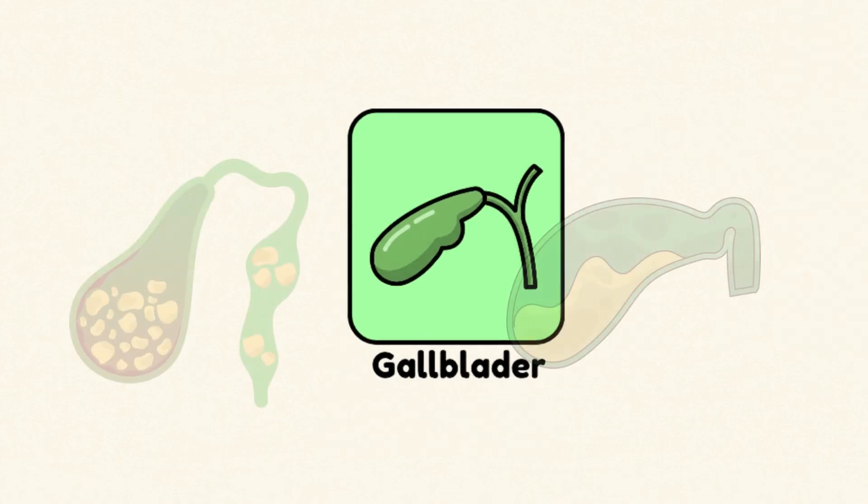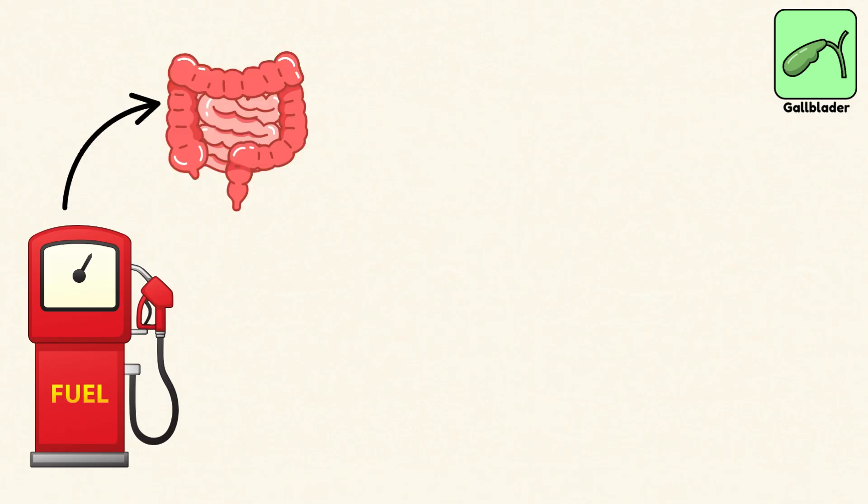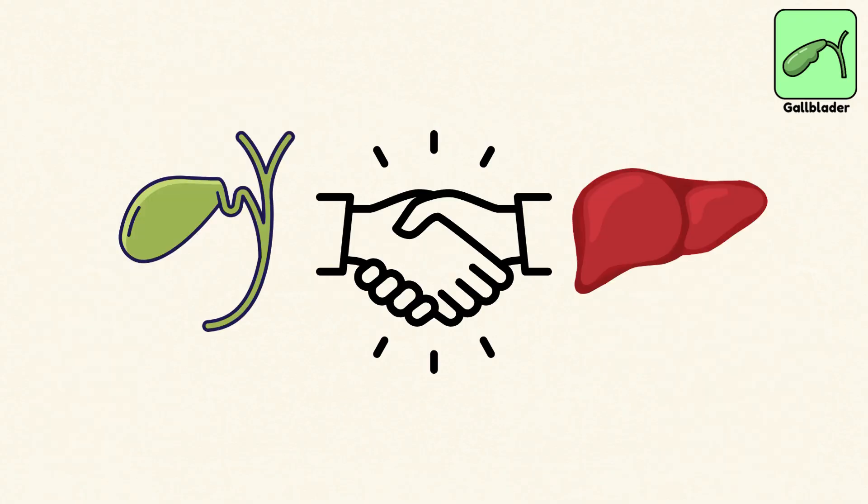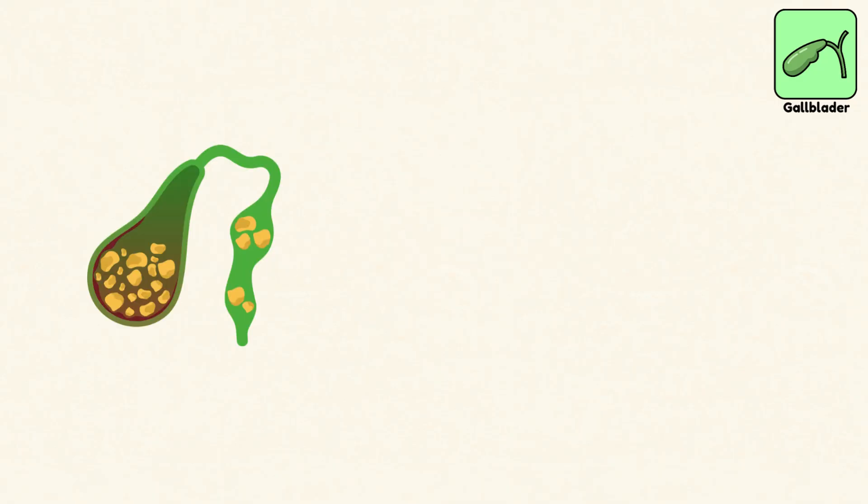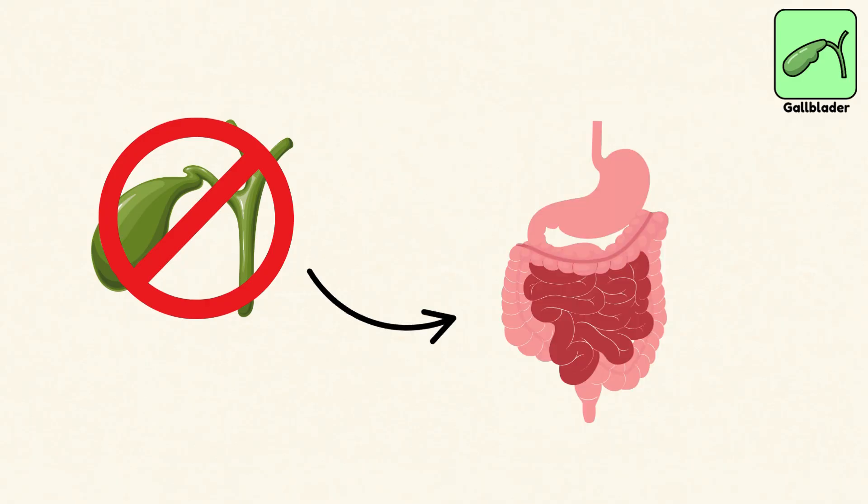Gallbladder. The gallbladder doesn't make bile, it stores it. Picture it like a fuel tank for digestion. When you eat something fatty, the gallbladder squeezes out bile into the small intestine to break it down. It works hand-in-hand with the liver. But here's the catch: gallstones can block the ducts and cause pain. If it's removed, digestion still works, just less efficiently.